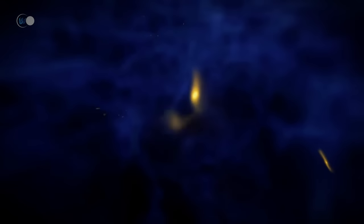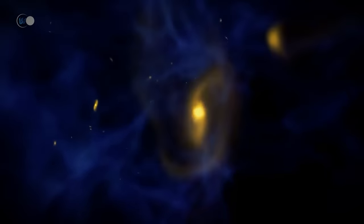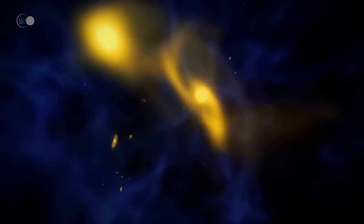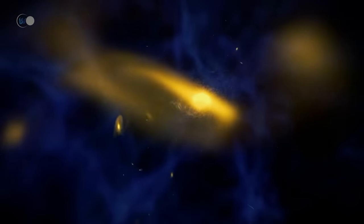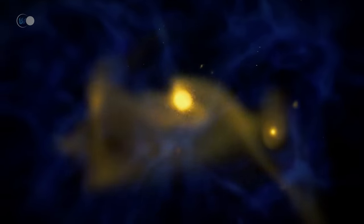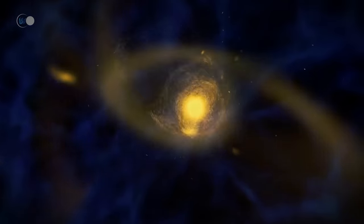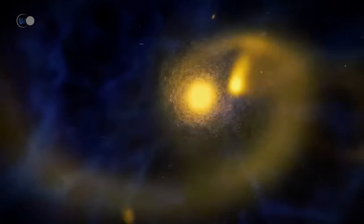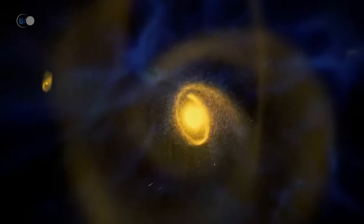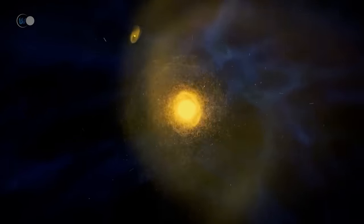It seems that in earlier times, the universe contained a higher proportion of spiral galaxies than today. This change in the appearance of the universe is due to repeated collisions between galaxies. Indeed, when spiral galaxies collide, they merge to give elliptical galaxies. The merger thus explains their large size and why they contain so little gas and so many red stars.